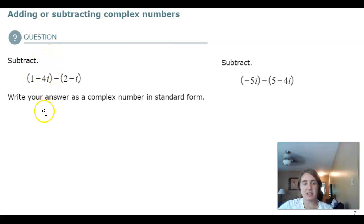So, it wants us to go ahead and write these in standard form. I can treat the i like I would any other variable. I'm going to distribute that negative 1. So, this looks like 1 minus 4i minus 2i plus i. I can combine like terms. My i's are like terms and my constants are like terms. So, I have 1 minus 2 minus 4i plus i. So, negative 1 minus 3i.